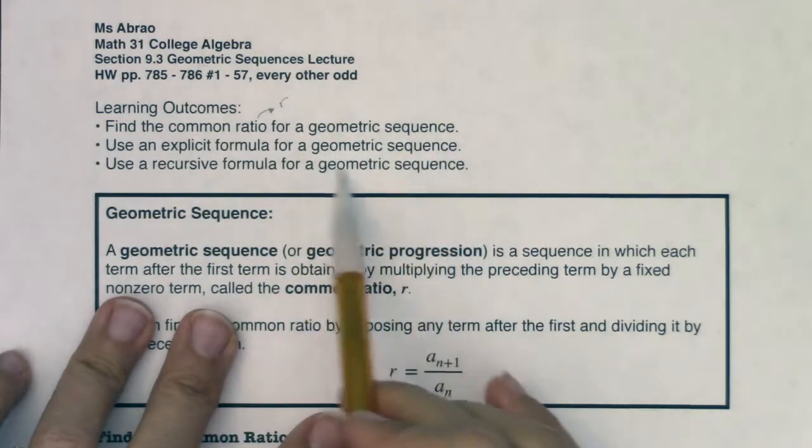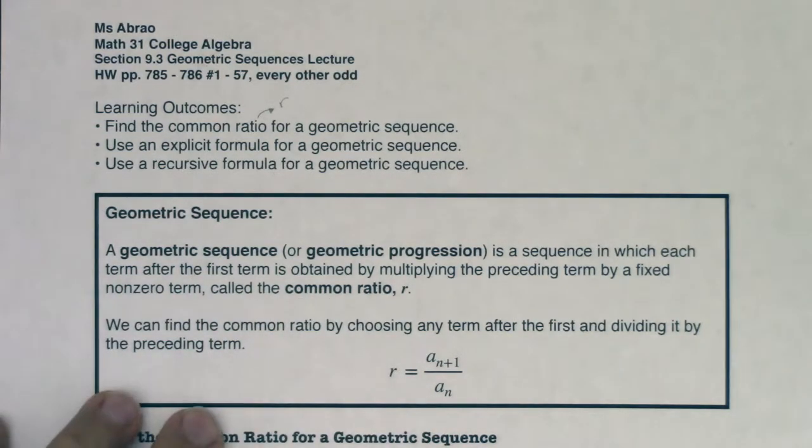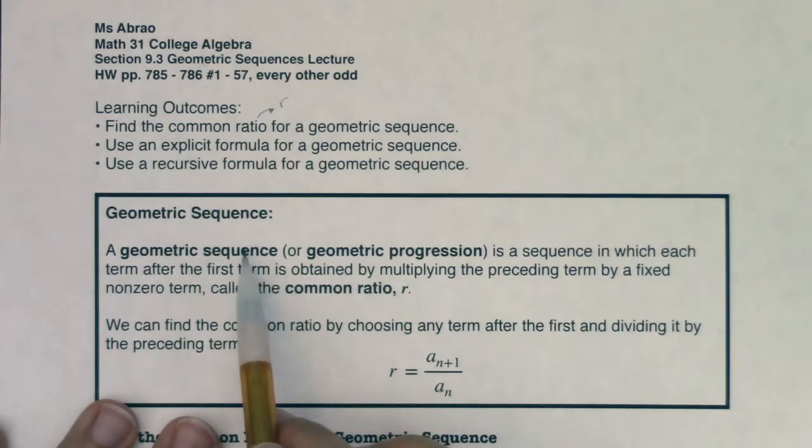Let's unpack a little bit more what a geometric sequence is. A geometric sequence, or geometric progression, is a sequence in which each term after the first term is obtained by multiplying the preceding term by a fixed nonzero term called the common ratio r. Anytime you hear geometric sequence, you think list separated by commas, but geometric, we're going to associate the letter r with it. We can find the common ratio by choosing any term after the first and dividing it by the preceding term. So this is going to help you find that common ratio. It's a sub n plus 1 in ratio to a sub n.